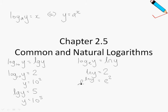Typically in your working, you can skip the intermediate step and go straight to the last step. One more example: if ln y equals 5, then y is just e to the power of 5. We will look at some tougher examples later.